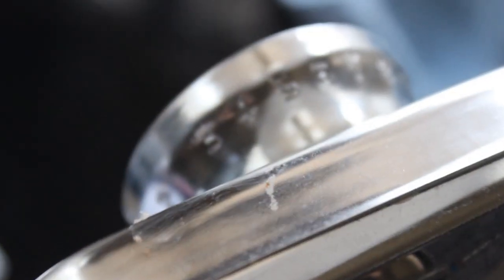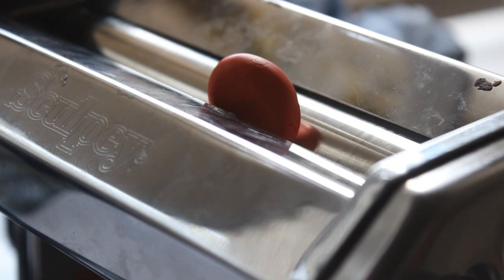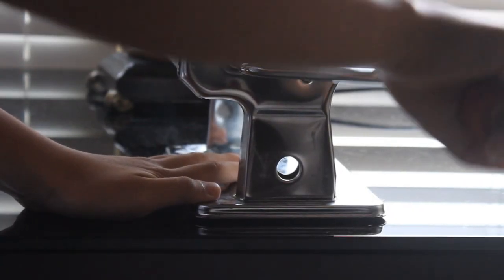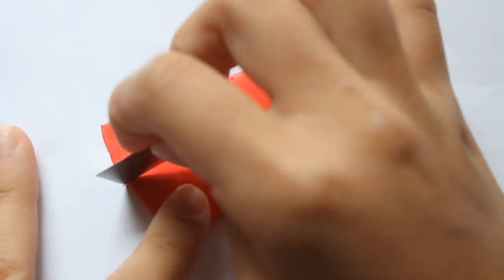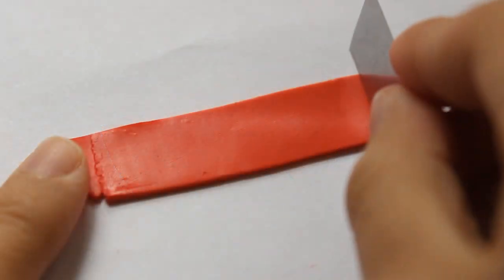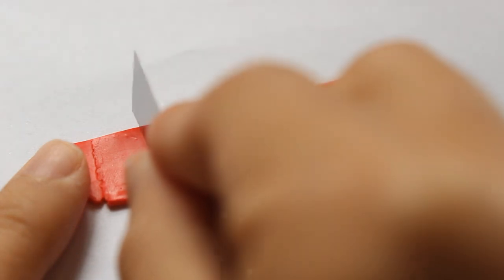I'm starting with Fimo soft red clay and the pasta setting on number five. If you don't have one you can just manually roll it out by hand. I'm cutting out the clay into the mug size that I want.